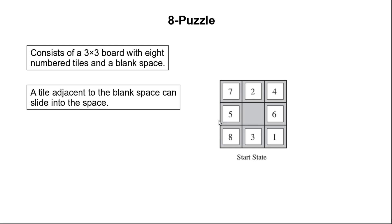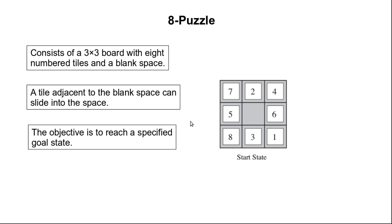A tile adjacent to the blank space can be slid into the blank space. For example, six can be moved into the blank space, or five may be moved into the blank space, or two may be moved to the blank space, or three may be moved to the blank space.